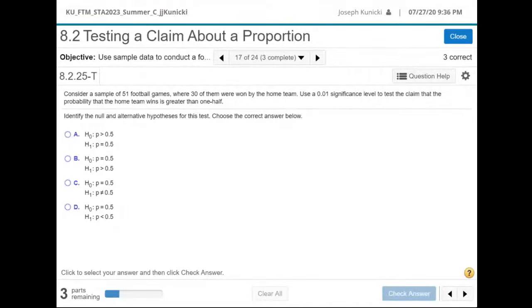Now we're going to do problem 8.2.25 testing a claim about a proportion. Consider a sample that's n equals 51, x is 30, alpha is 0.01. The claim is that the home team wins is greater than one half. That has to be the alternative, it's a right tail test. So the null is that it's equal or less than or equal, but we just use equals.